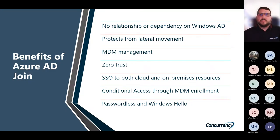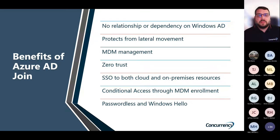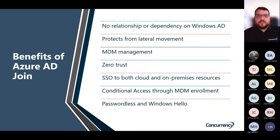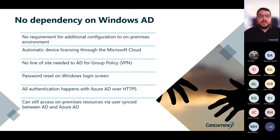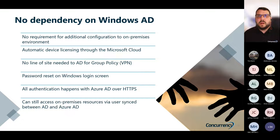What are some benefits of Azure AD Join? We don't have that dependency on Windows AD. We can protect from lateral movement. We're able to do MDM management, and through MDM management we're using zero trust to secure everything. We'll have SSO for both cloud and on-premises resources. We can use conditional access, passwordless, and Windows Hello for authentication. We no longer need a VPN to connect. We don't need line of sight for authentication. We can do automatic device licensing through the Microsoft cloud, enable password reset right at the logon screen, and all authentication happens over HTTPS. If you still need to access on-prem resources, you can do that using Azure AD Connect syncing user accounts from on-prem to Azure AD.